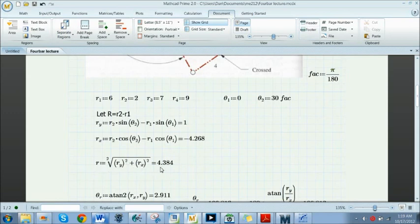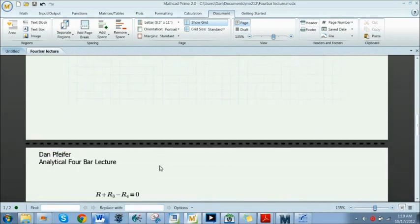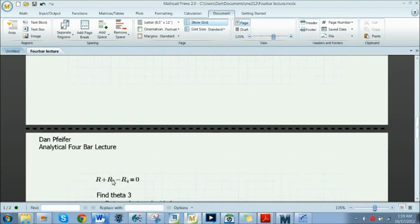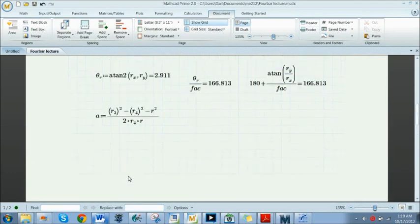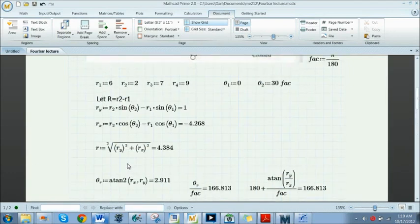This next part here was simply just Pythagorean theorem, finding the length of the vector R that I created. Ultimately we have to go back to what are we working towards? Well, we want to work towards this vector loop equation down here, because I don't know theta 3 and I don't know theta 4, so I need to find a way to get rid of one of those.